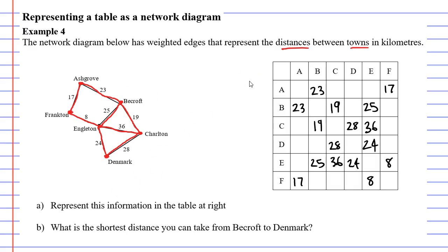You'll notice we have a lot of blank spots here and we need to put dashes in there to show that there is no connection between these vertices. We'll now look at question B which says what is the shortest distance you can take from Beecroft to Denmark? Now there are several different routes you can take, but there's two main ones that I noticed. I could go through Engleton, which seems quite short, and the next one that seems quite short is through Charlton. So we're going to figure out which one's better.